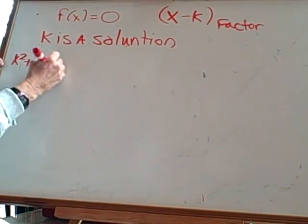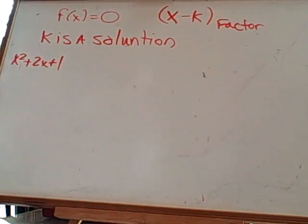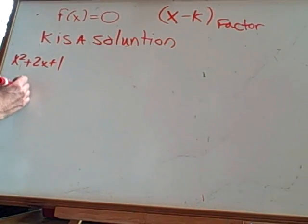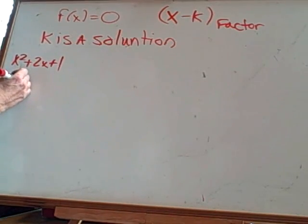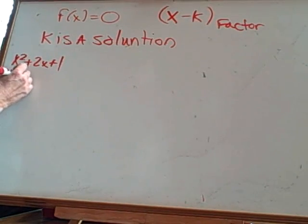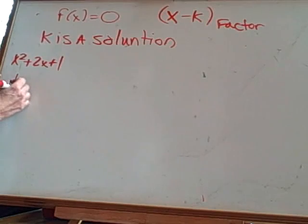x squared plus 2x plus 1. Let's use that as an example. Let's factor that, shall we? Yes, we shall. So if we did the diamond on that, that would be a times c would be 1, b would be 2, so it would be 1 and 1.